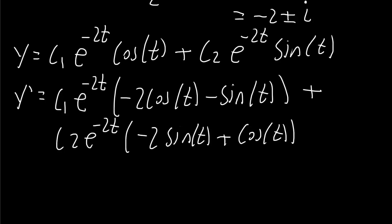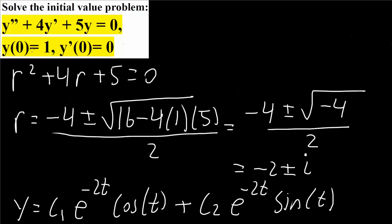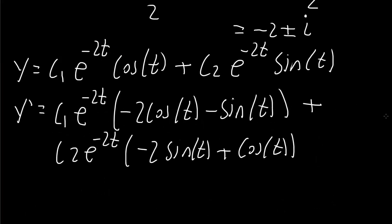Going back to the original problem: y(0) equals 1, so t equals 0 and y equals 1; y prime(0) equals 0, so t equals 0 and y prime equals 0. The next step is to plug in those values — t equals 0, y equals 1, and y prime equals 0.